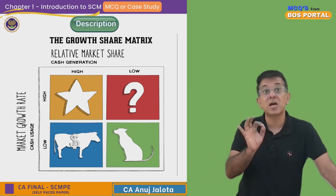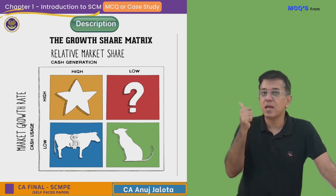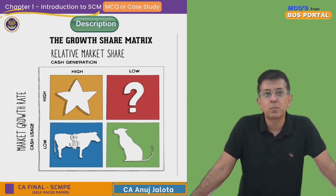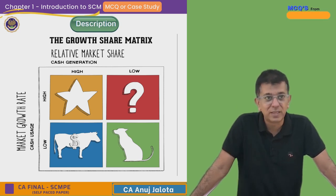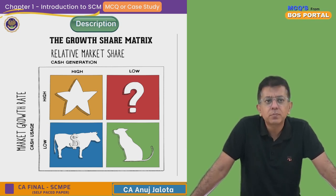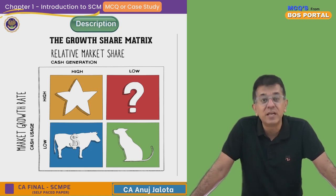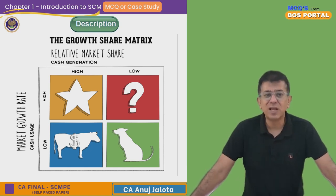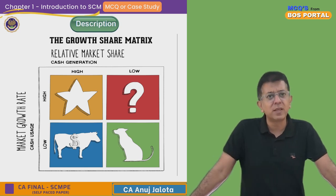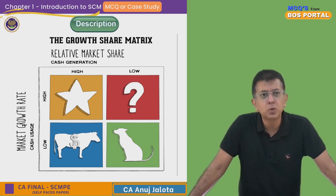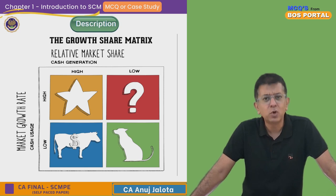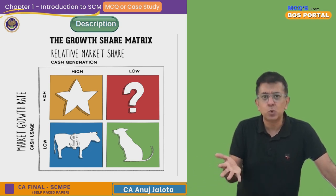A Star product has very high market share and very high growth rate. Question Mark products have low market share but high growth rate. Cash Cow products have low growth rate but relatively high market share. Pets — some people also call them Dogs — are products that have both low market growth and low relative market share. The name 'Pets' implies you only keep them because you love them, otherwise there's no real use.